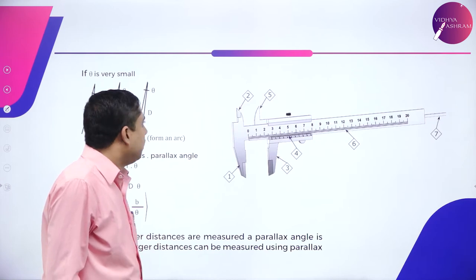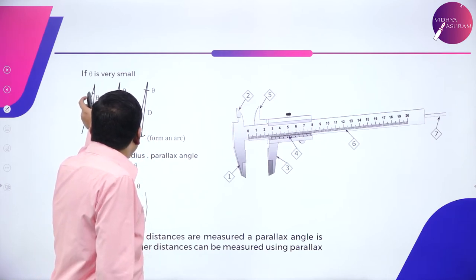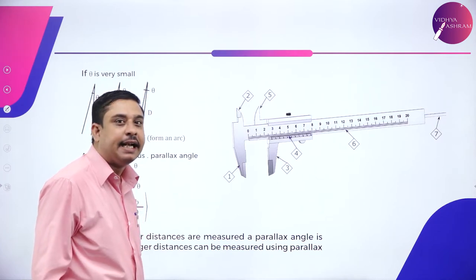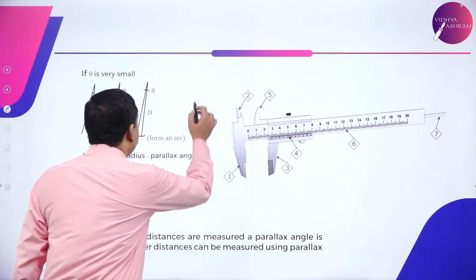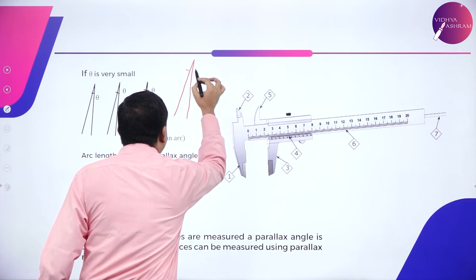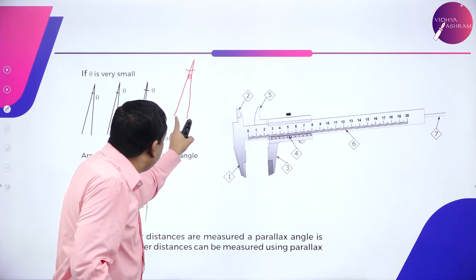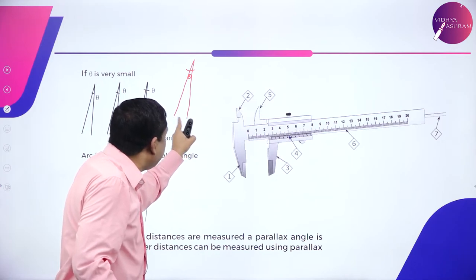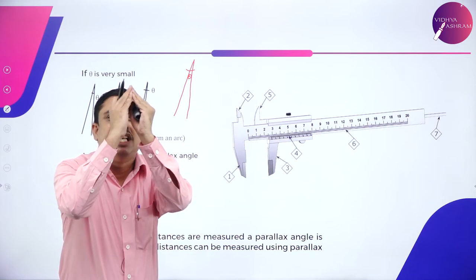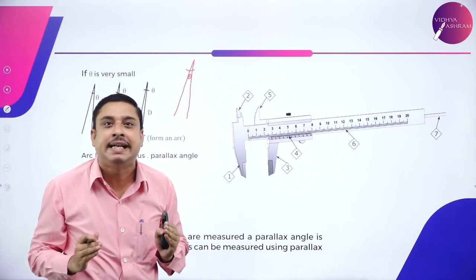Now, what I assume is theta, the parallax angle is getting reduced. So, in the first case, theta is getting reduced. You observe, the two points here are coming close. The moment this angle is shrinking, the moment parallax angle is contracting,